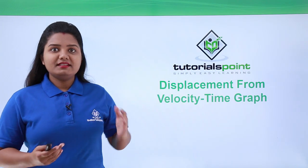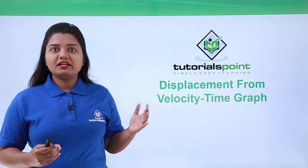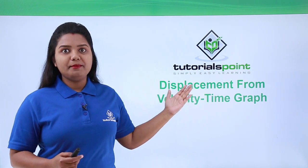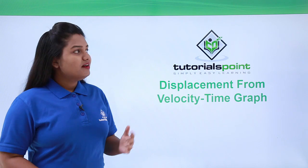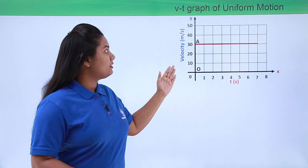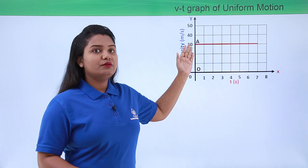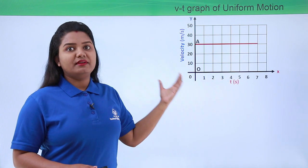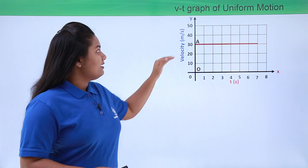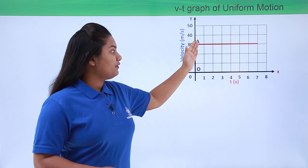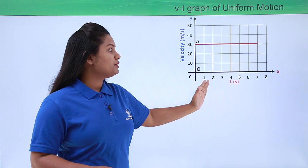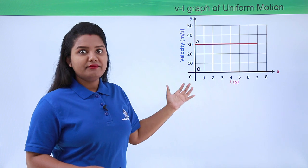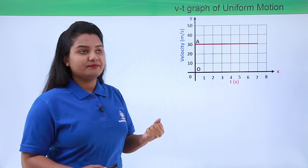Hello everyone. In this video we will be talking about how to find displacement from a velocity-time graph. Here I have a velocity-time graph of a body with uniform motion — that is, with uniform velocity throughout. This graph is parallel to the time axis, which shows that the body is moving with the same velocity throughout its motion.